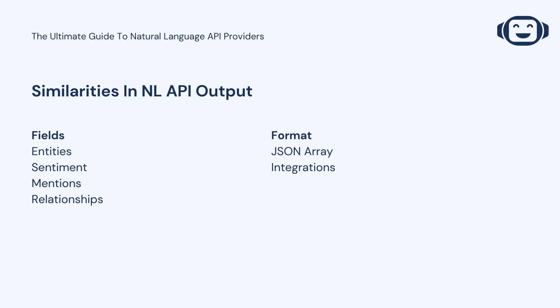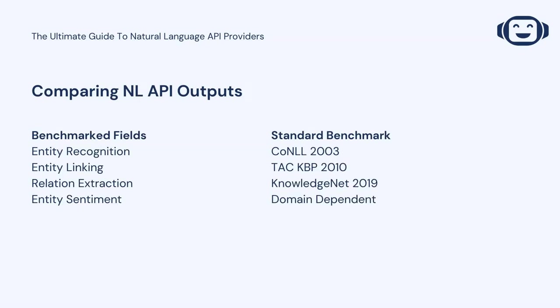So, how should we go about judging between these services? It turns out there are pretty well-established benchmarks for a range of things you should be looking for. The fields most commonly established by benchmarks include entity recognition, entity linking, relation extraction, and entity sentiment.